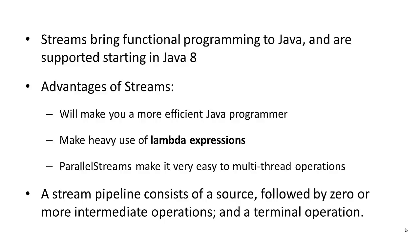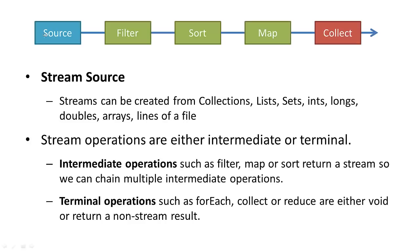A streams pipeline consists of a source, where your data flows out of, followed by zero or more intermediate operations — you may have two, three, or four intermediate operations in a lot of cases — and one terminal operation. Your source is going to stream a stream of elements. That stream of elements can be filtered, sorted, or mapped, or different other series of operations applied to each element. And then at the end it can be either collected or reduced, or some other terminal operation, but only one terminal operation is performed.